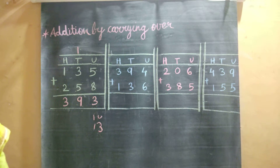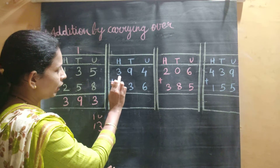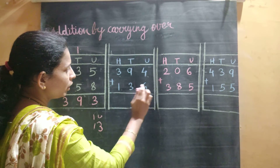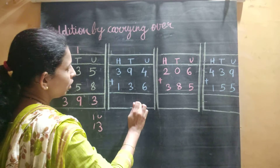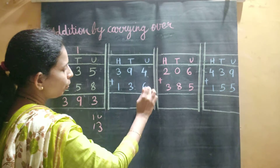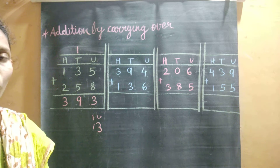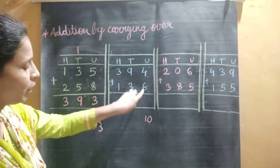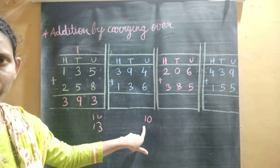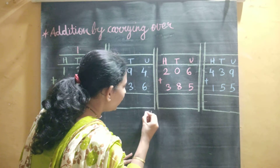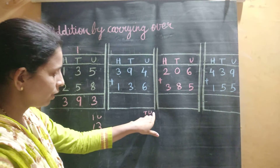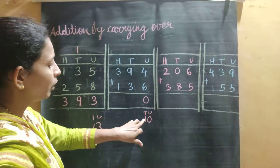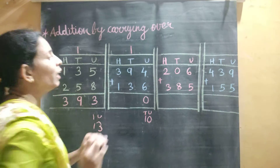Now we will see the next example: 394 plus 136. First, addition of the unit places — 4 plus 6. Students, just do it fast and tell me. 4 plus 6 is equal to 10. It is a 2-digit number — that is 0 units and 1 ten. So we will write 0 at the unit place and carry over 1 to the tens place.